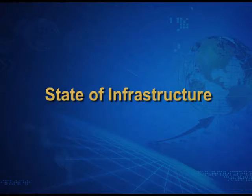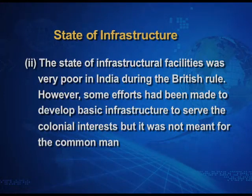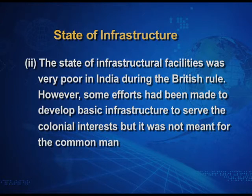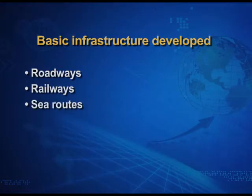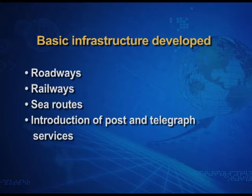State of infrastructure. Infrastructural facilities were very poor in India during the British rule. However, some efforts had been made to develop basic infrastructure to serve colonial interests, but it was not meant for the common man. The basic infrastructure developed included roadways, railways, sea routes, and most importantly, the introduction of post and telegraph services.